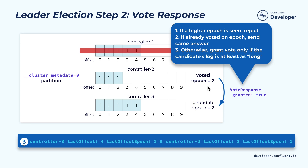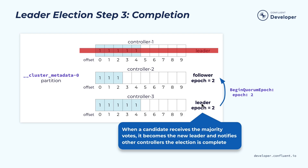The vote request includes the candidate's epoch and metadata about its log — the end offset and the latest epoch. Upon receiving this request, a follower first checks if it has seen a higher epoch; if so, it rejects the request. It also checks if it has already responded to this epoch and, if so, sends the same response. Otherwise, the follower compares the candidate's log with its own to see which is longer. If the candidate's log is at least as long as the follower's local log, the follower votes yes. Once the candidate collects enough votes — in this case, two out of three — it becomes the new leader. It then informs other replicas through another request, telling them it is the new leader and they should follow it.